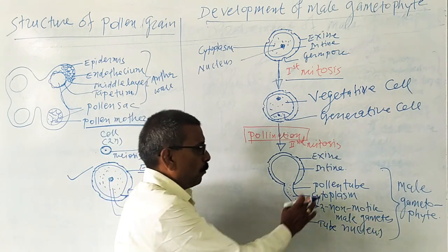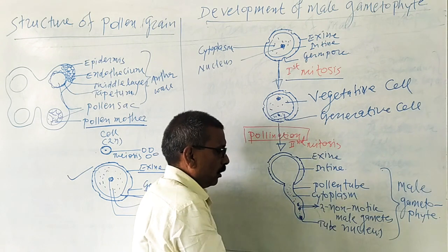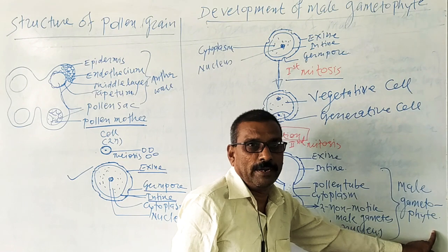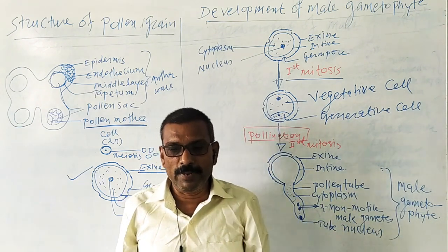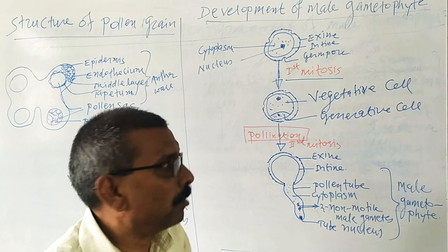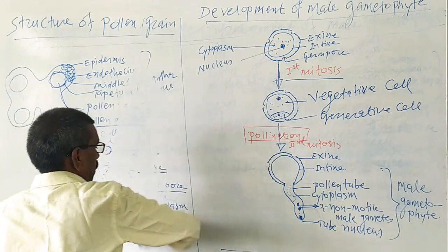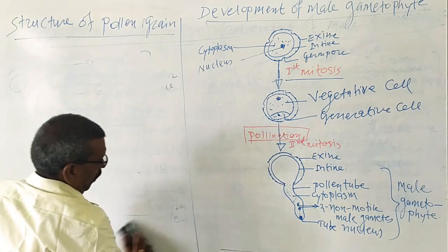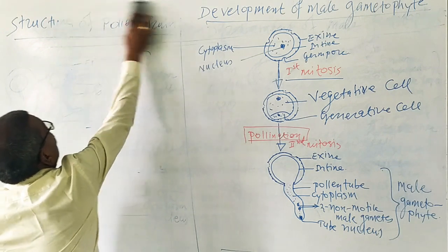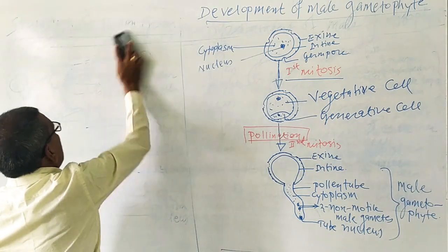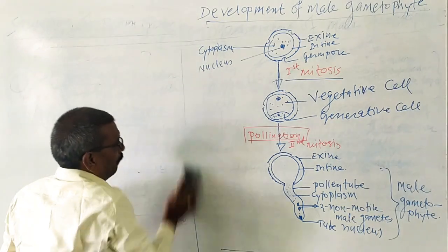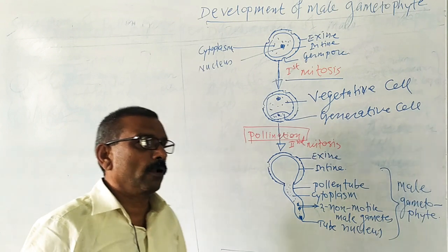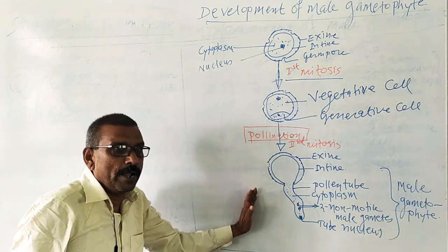The pollen tube, cytoplasm, two non-motile male gametes, and the tube nucleus together form the male gametophyte. Development of the male gametophyte from the pollen grain completes in two steps: before pollination inside the pollen sac, and after pollination on the receptive stigma. It develops from a unicellular, uninucleated, haploid pollen grain.